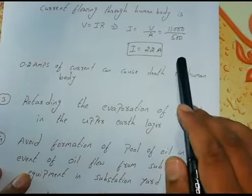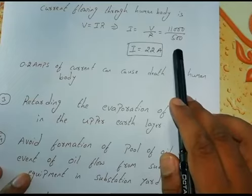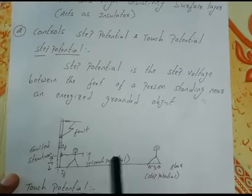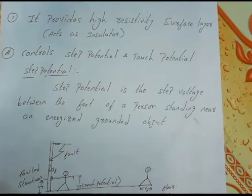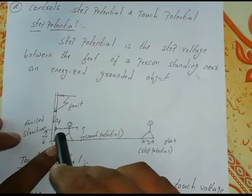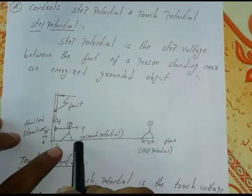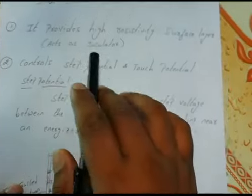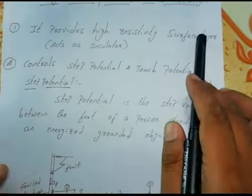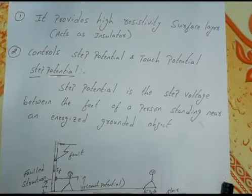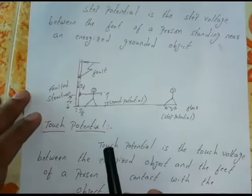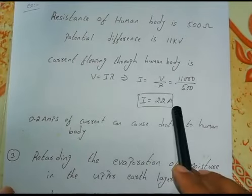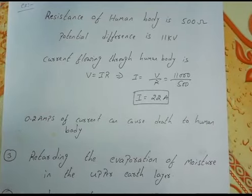As per research analysis, 0.2 amps of current can cause death to a human body. So 22 amps is a very huge current which causes instant death. When you put gravel or ballast in the substation, it will act as an insulator — this fault current will be resisted because the ground is not at zero potential. So the ballast provides high resistance surface layer, acting as an insulator and thereby avoiding step potential and touch potential in the substation. 0.2 amps can cause death, and 22 amps can be avoided with the help of substation ballast.